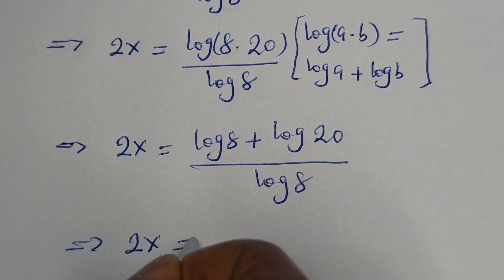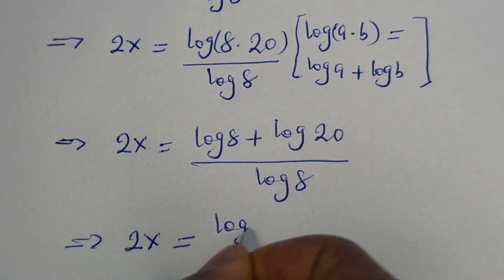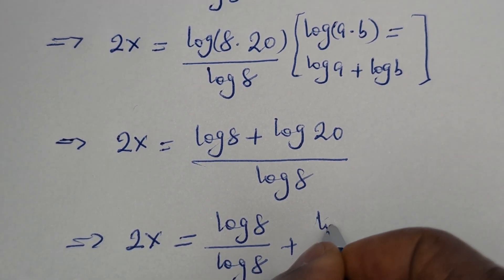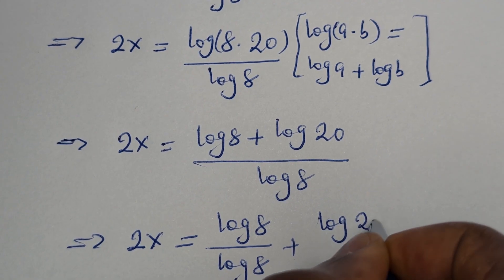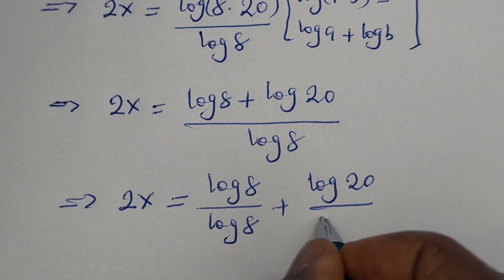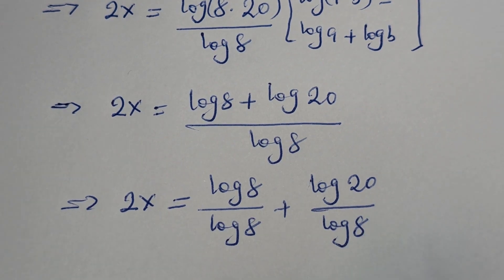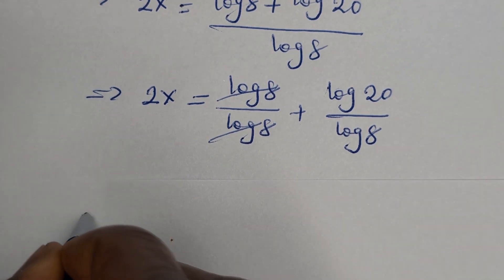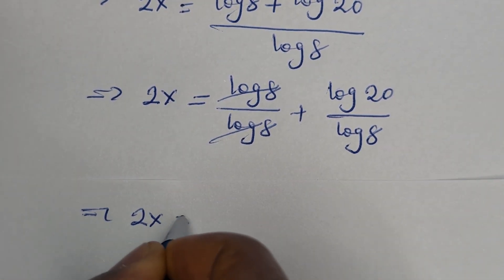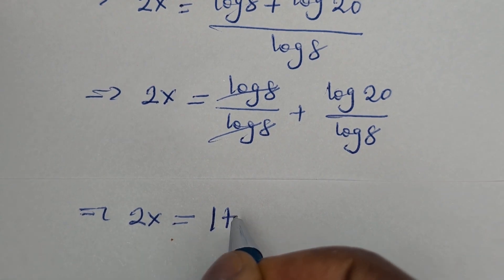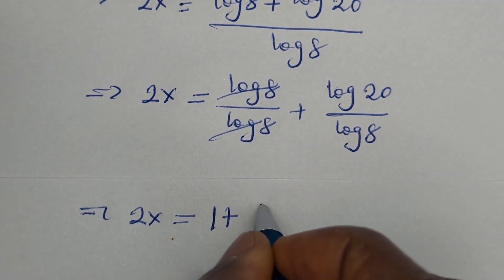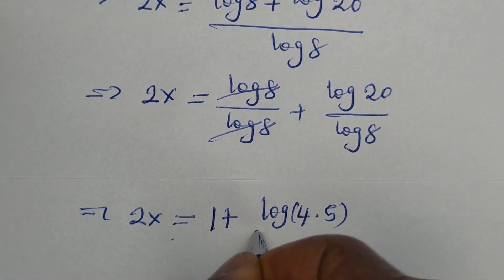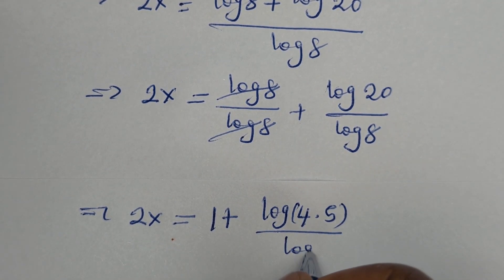2x is equal to log 8 divided by log 8 plus log 20 divided by log 8. Log 8 cancels log 8, so 2x is equal to 1 plus log 20. Log 20 can be written as log 4 multiplied by 5, divided by log 8.